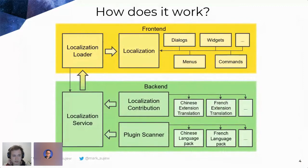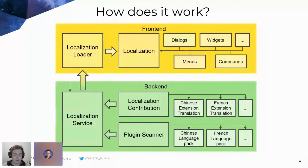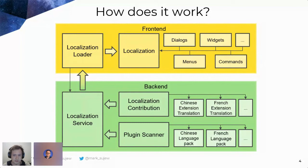Basically everything described and how it works is shown in this diagram. Let's start at the bottom: once the backend starts, any deployed plugins will be read by the plugin scanner. That includes VS Code language packs installed by the user or packaged with the application. These are transformed into key-value pairs of the respective locale and afterwards pumped into the localization service, which is quite key here.